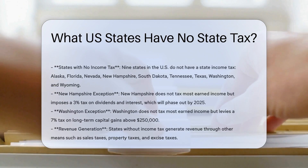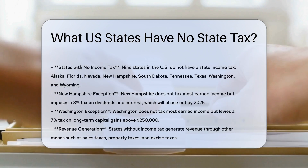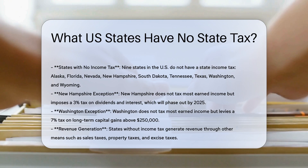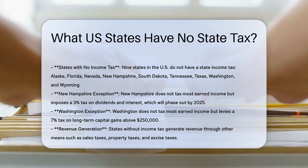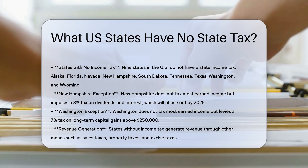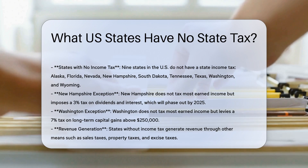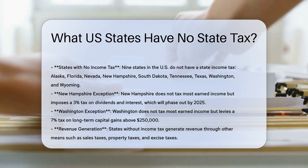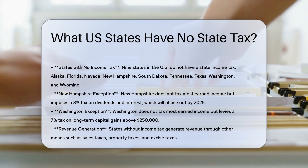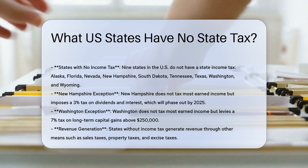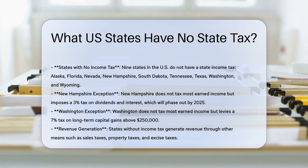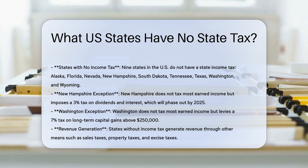In the United States, the power to tax is distributed between the federal government and individual states. Each state has its own constitution and laws that determine what types of taxes can be imposed on its residents. While most states impose an income tax on wages and other forms of income, some states have chosen a different approach.